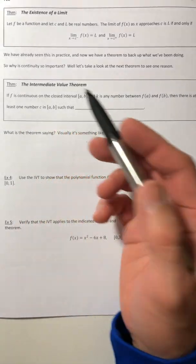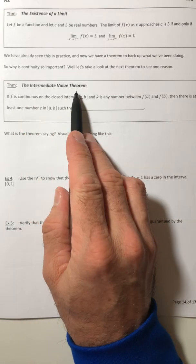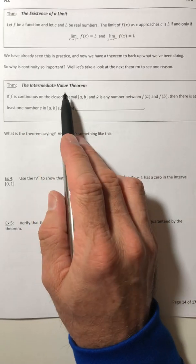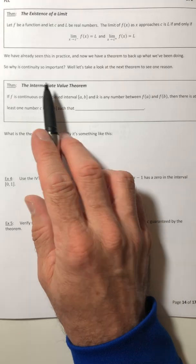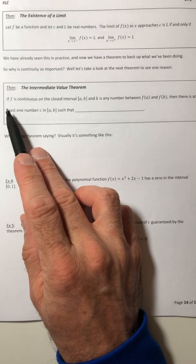Alright, this last theorem that we're going to look at from this section is the Intermediate Value Theorem. So this theorem is dependent on that continuity, so that's again why continuity is kind of important.